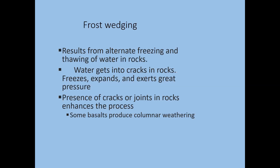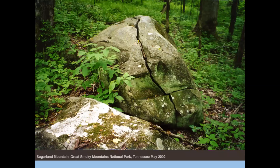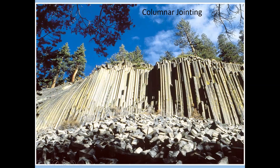Some basalts, which is an igneous rock common in California, will produce a very unique form from frost wedging called columnar weathering or columnar jointing. This is a rock split down the middle — what caused that is freeze-thaw action. Water expanded the weak areas in the rock and over time it splits apart. This example is from the Smoky Mountains in Tennessee.